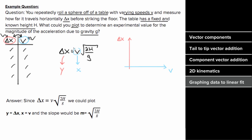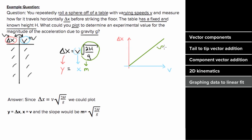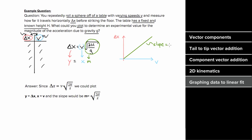Now we can figure out what our slope represents. We have y equals m times x, and everything multiplying what we called x is our slope. The way it's written, the slope is on the right-hand side, but m times x equals x times m, so the entire term — the square root of 2h over g — is the slope of this graph. We'll get a linear fit, and the number we find for the slope equals the square root of 2h over g.